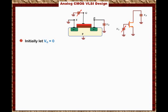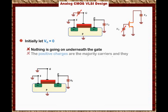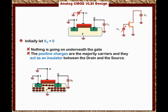Looking at the 2D structure of the transistor with the gate connected to ground: the body is a P-type material, meaning there are more free holes within the body. The positive charges are the majority carriers and they act as an insulator between the drain and the source, so current will not flow. The transistor is off because there is no path for current to flow from drain to source.